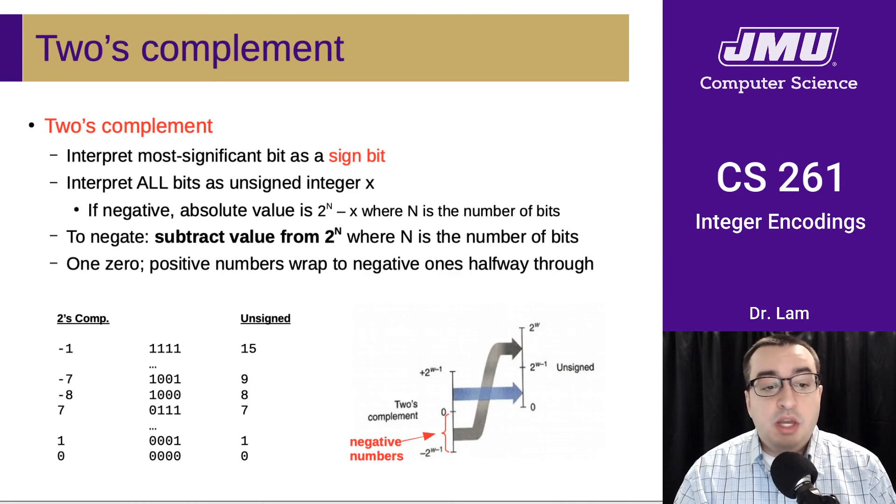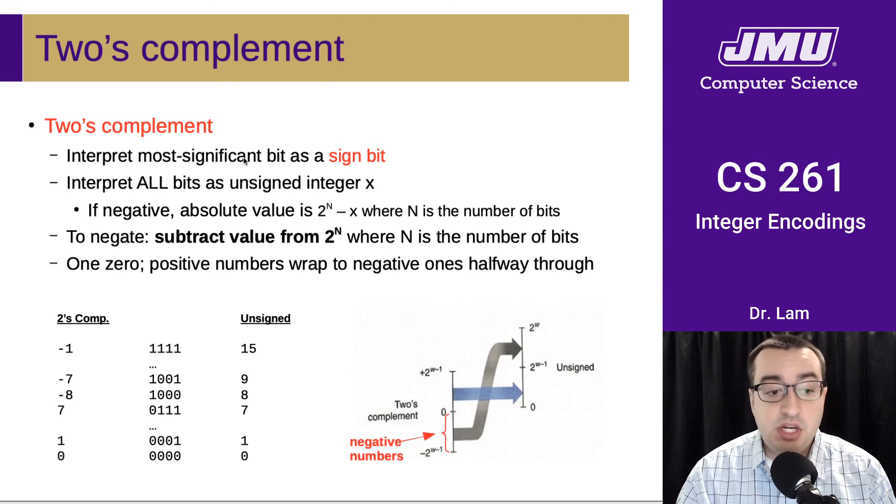So in two's complement, we still interpret the most significant bit as a sign bit, so that again is unchanged. In order to think about the value of the number that's being stored,